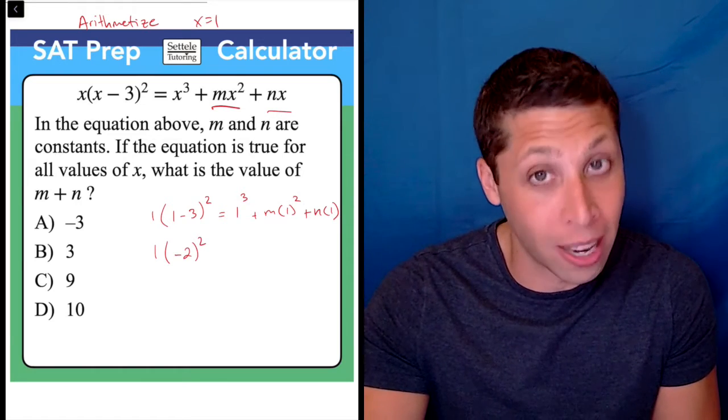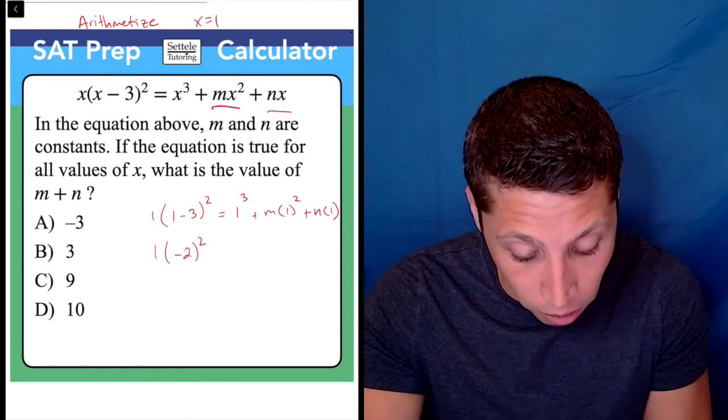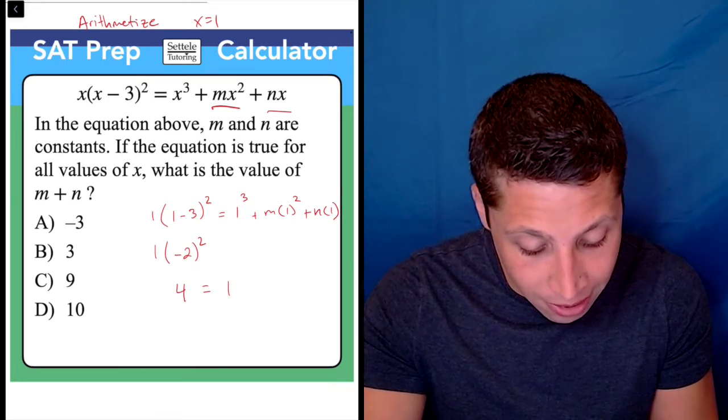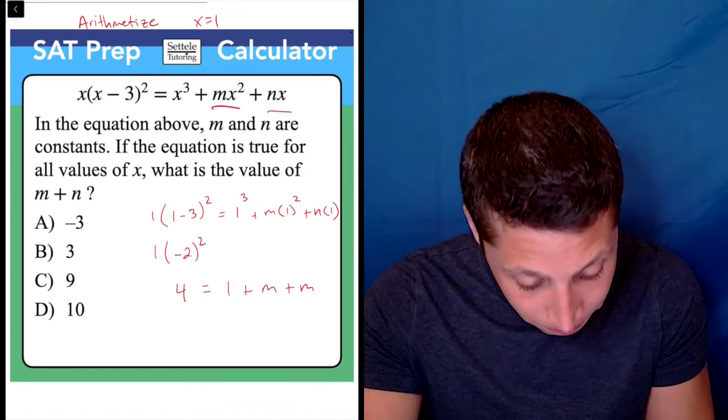Well, that's -2 × -2 = 4, so that's going to be 4 = 1 + m + n.